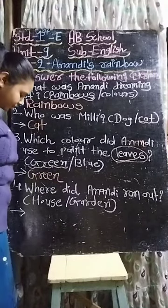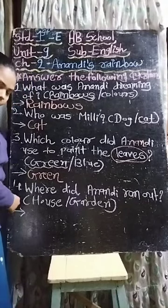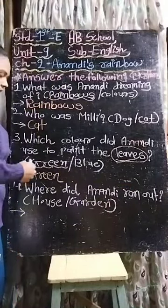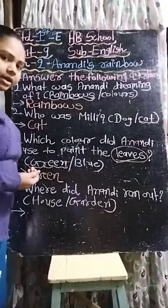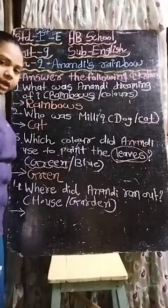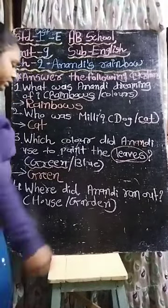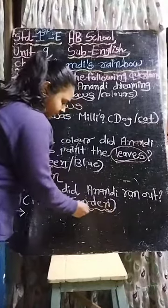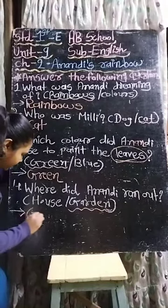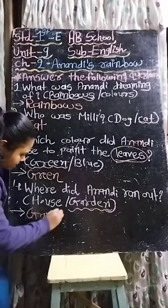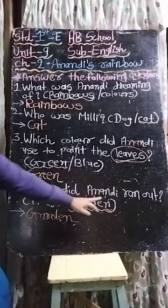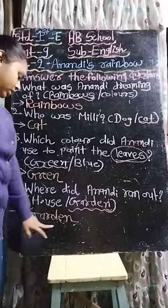Now fourth one: Where did Anandi run out? Ki Anandi bhaagkar kahaan par aa gayi — house mein ya garden mein? She ran out to the garden. So write down the answer here: garden. Anandi ran out to the garden.